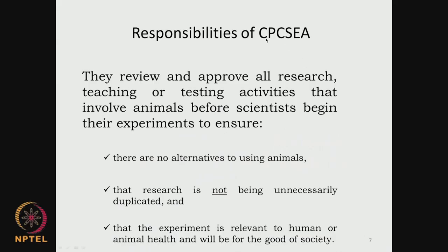What are the responsibilities of the CPCSEA? They review and approve all research, teaching, or testing activities that make use of animals — small animals, large animals and so on. They look at whether there are no alternatives to using animals and the research is not duplicated. If the data is already available, why carry out standard research? They will not approve if it is a duplication, and they also look at whether these experiments are relevant to human or animal health.